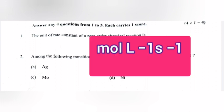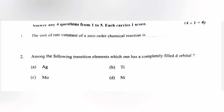Question 2: Among the following transition elements, which one has a complete field d-orbital? A. Silver, B. Titanium, C. Molybdenum, D. Nickel. Answer: A. Silver.